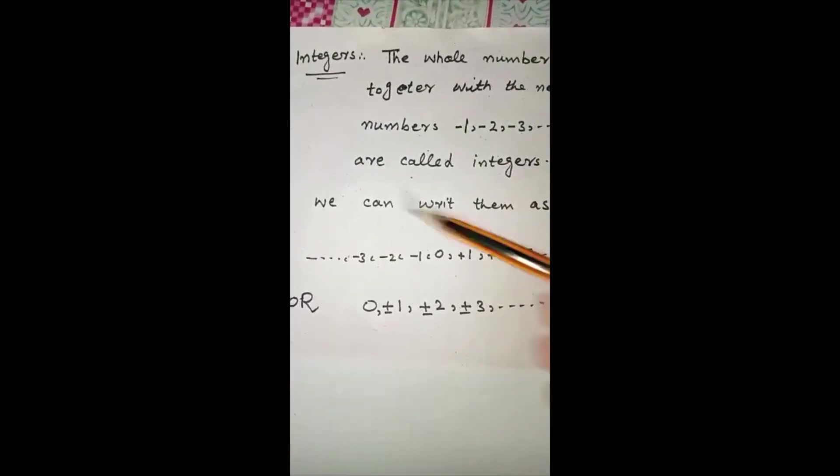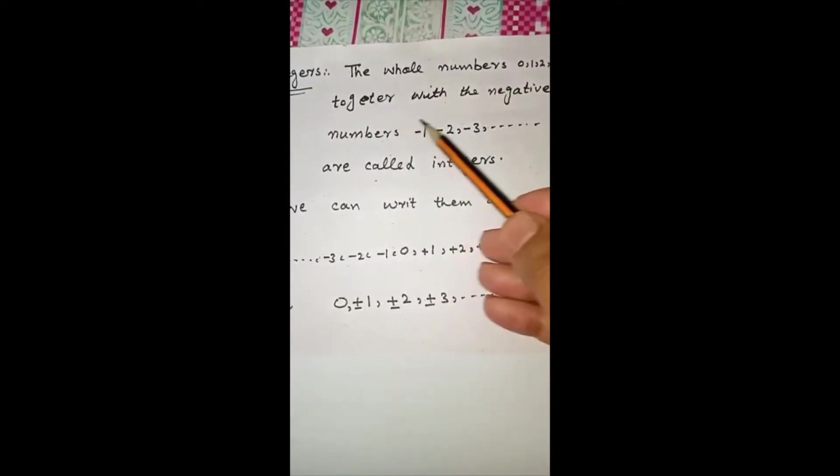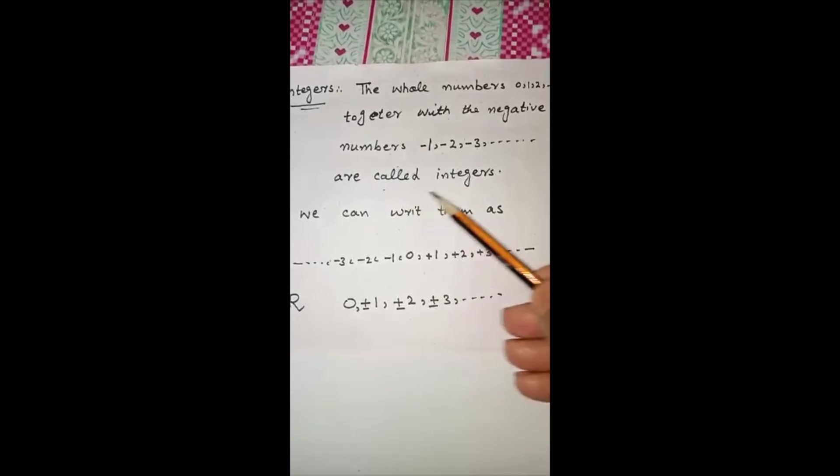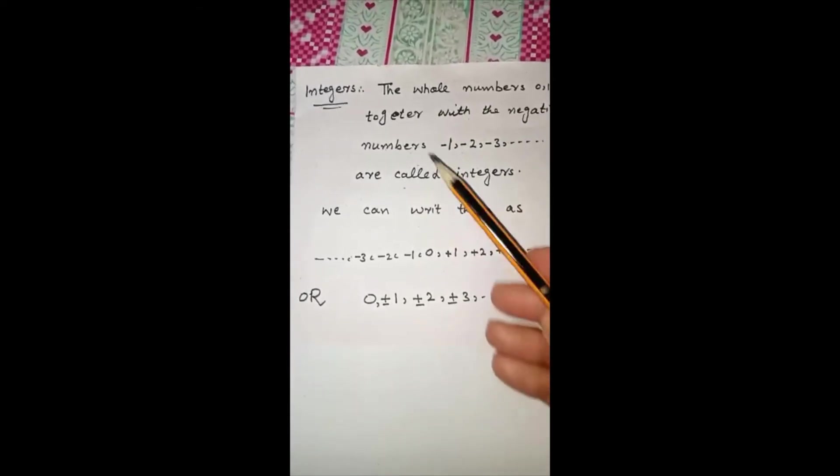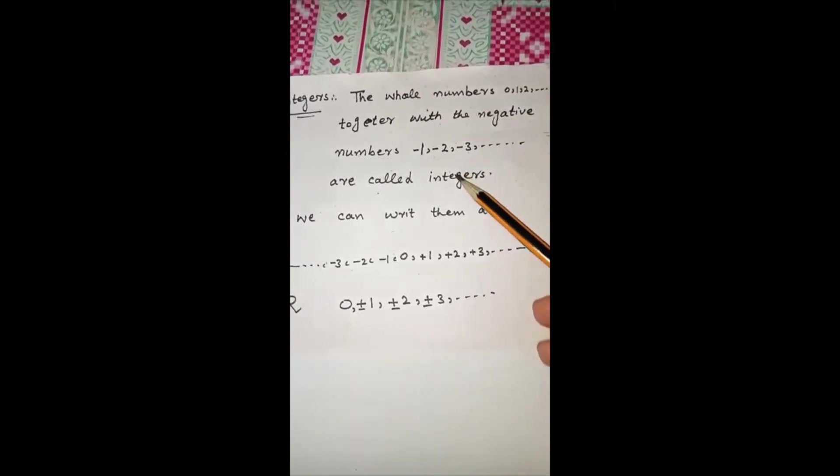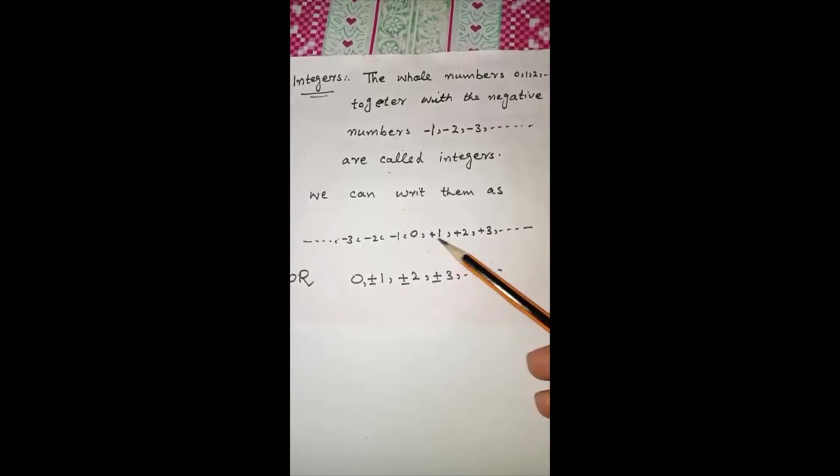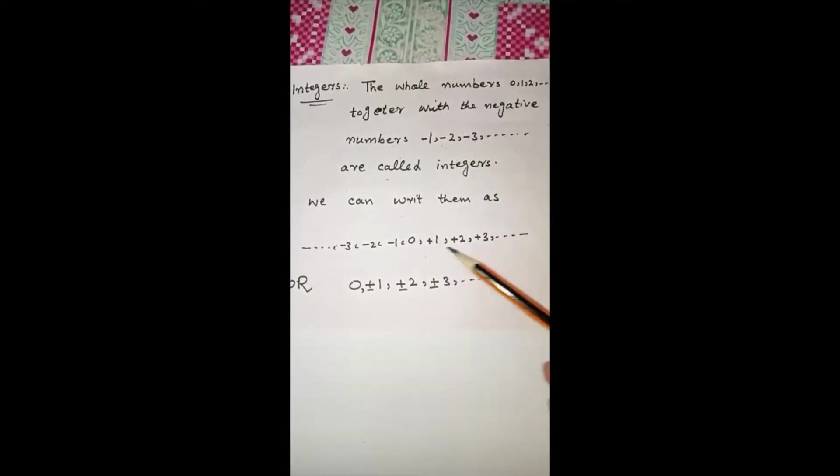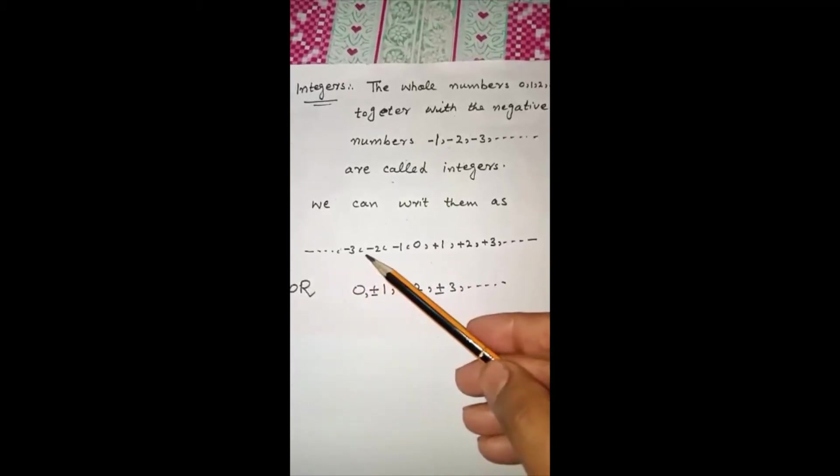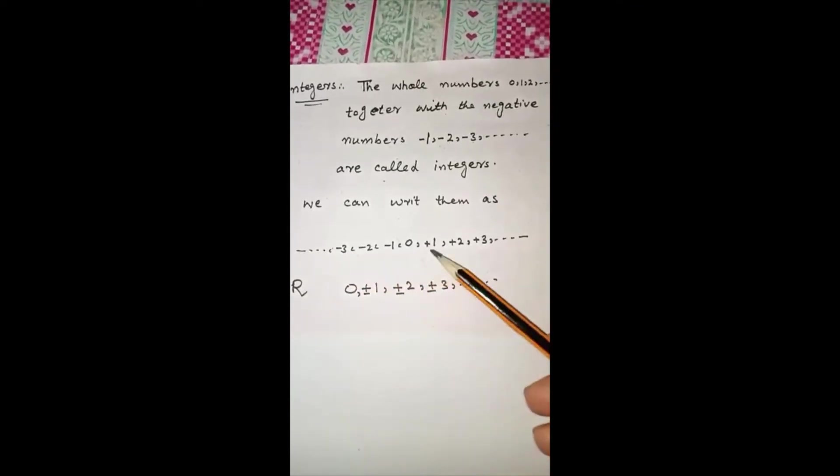Now we define integers. The whole numbers 0, 1, 2, 3 and so on together with the negative numbers minus 1, minus 2, minus 3 and so on are called integers. Whole numbers and negative numbers combined together are called integers.